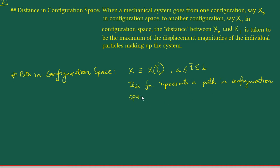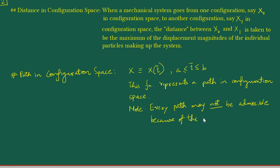We have to qualify this properly — every path that we may think of may not be admissible; it may not be allowed. Every path may not be admissible because of the constraints present in the mechanical system. We must always respect the constraints of the mechanical system, and because those constraints may be present, not every path you may think of may be admissible.